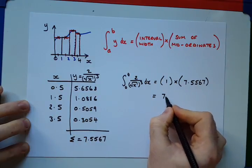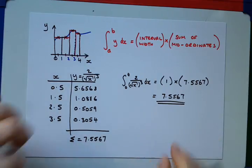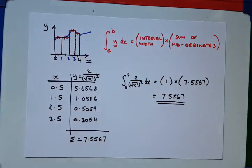which, of course, is equal to 7.5567. So, using the mid-ordinate rule, I was able to get an area underneath this curve between 0 and 4, which I was unable to do using analytical integration methods.